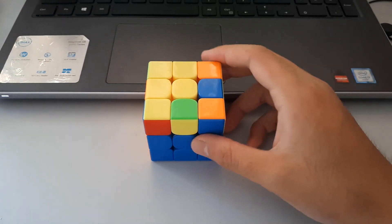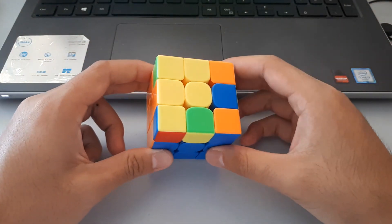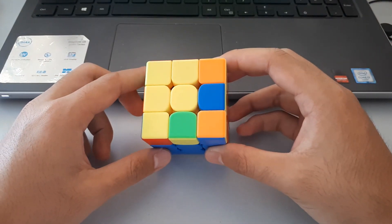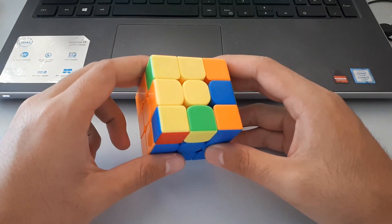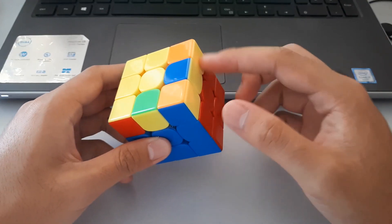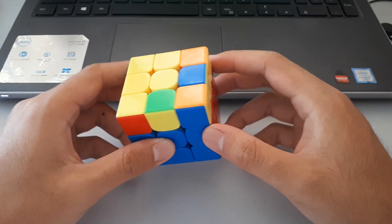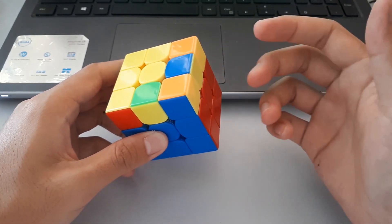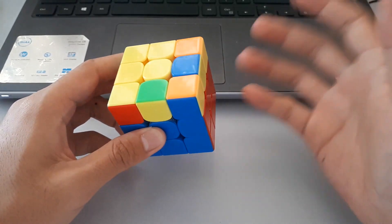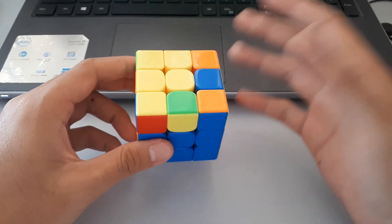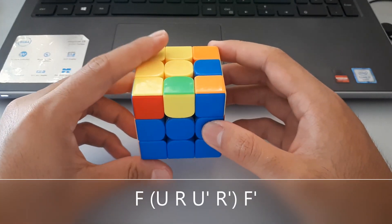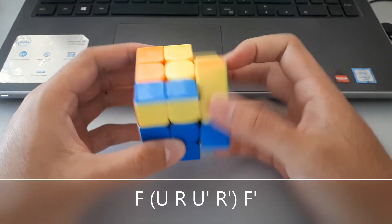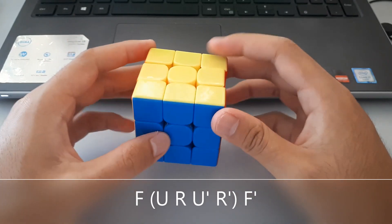Moving on to the P shapes, this is the first case here. It can be recognized by there being a P shape here, and also by the 3x1 bar of yellow. The yellow here is on the right, which reminds us that we need to use our right hand for this algorithm, because there is a mirror for this one. For this case, it's F, inverse sexy, F prime.